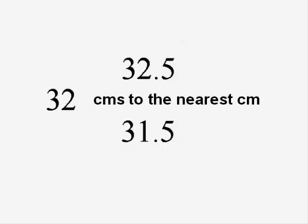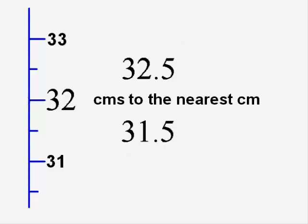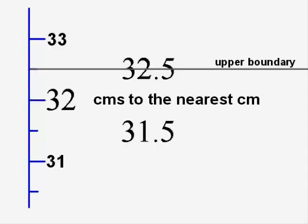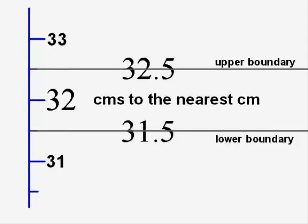Looking at it in a slightly different way, let's look at a number scale and look at that line there which represents the 32.5 line. We could describe that as the upper boundary of all the numbers which round to 32. Numbers less than that clearly round to 32 but that's the sort of boundary line. At the bottom end we could describe 31.5 as the lower boundary of all the numbers that round to 32.